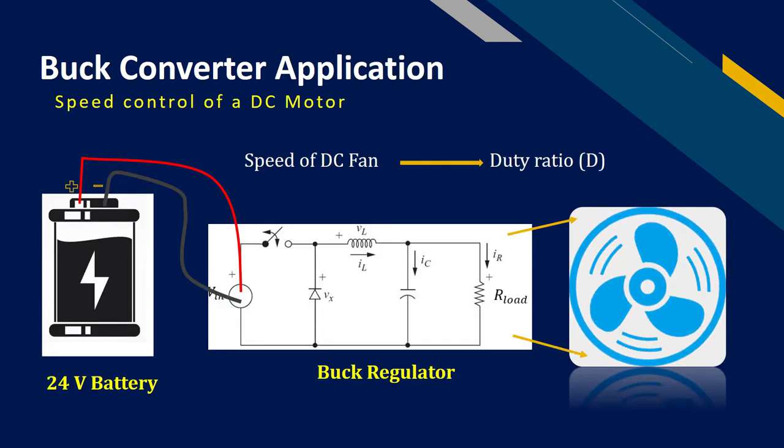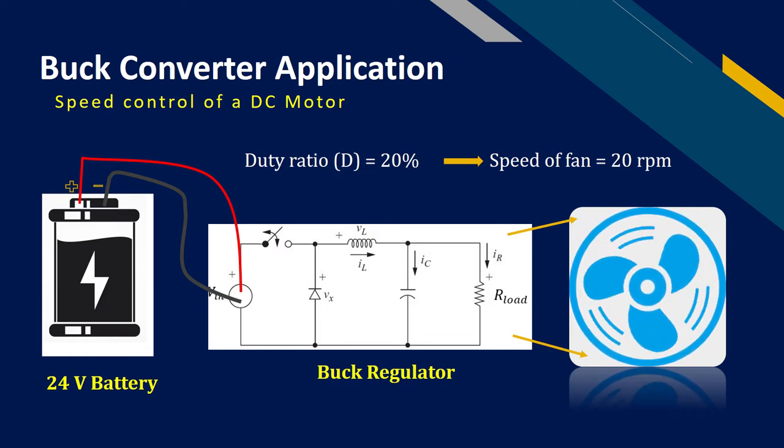For example, if we consider the speed control of DC motor, the speed of this DC fan is dependent upon the duty ratio. When the duty ratio is 20% then the speed is also 20 revolutions per minute. When the duty ratio is increased to 40% then the speed is also increased to 40 revolutions per minute. Similarly, when the duty ratio is increased to 60% then the speed is also increased to 60 revolutions per minute.